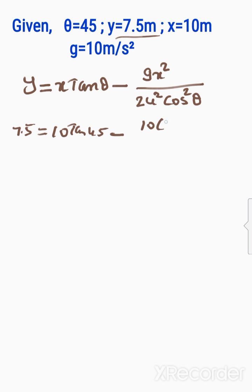That is 10 squared divided by 2u²cos²45°. Cos 45° is 1 by √2.